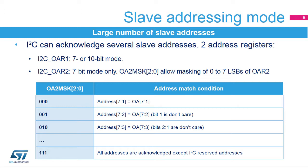The I2C slave can acknowledge several slave addresses. The slave addresses are programmed into two registers. Own Address Register 1 can be programmed with a 7- or 10-bit address. Own Address Register 2 can be programmed with a 7-bit address, but the least significant bits of this address can be masked through the OA2MSK register to acknowledge multiple slave addresses. The two Own Address Registers can be enabled simultaneously.